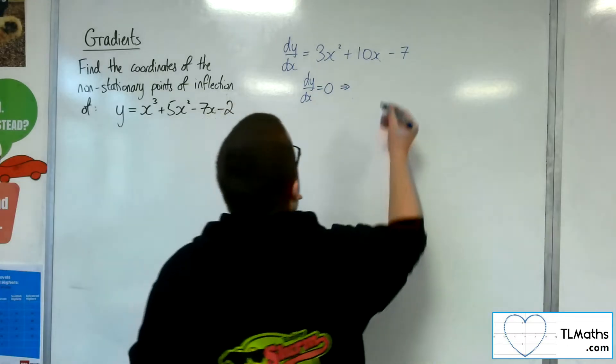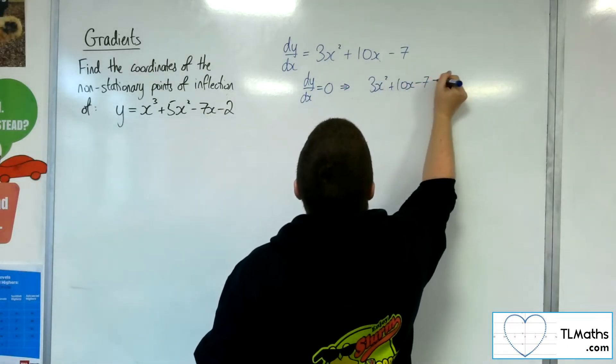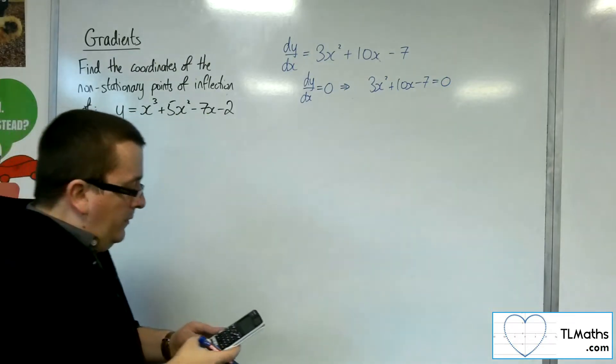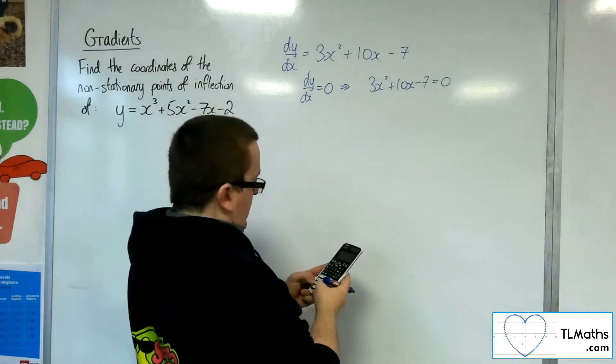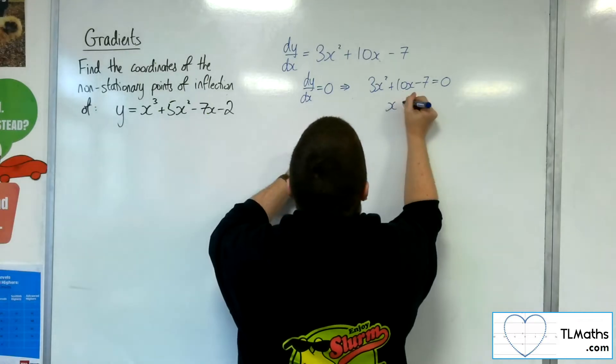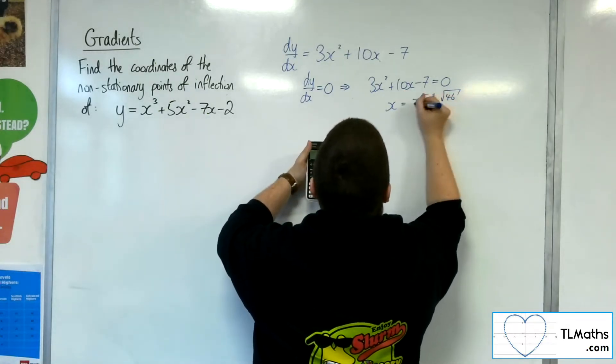If I put this equal to 0, the 3x squared plus 10x minus 7, I'm going to try that on my calculator. So, we've got 3, 10, minus 7, and we get x is minus 5 plus or minus the square root of 46 over 3.